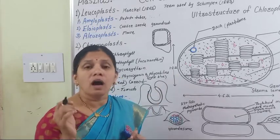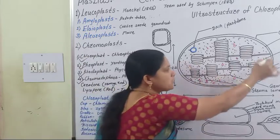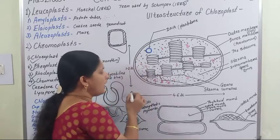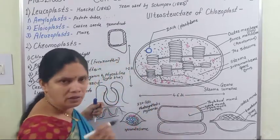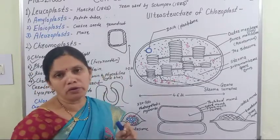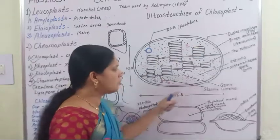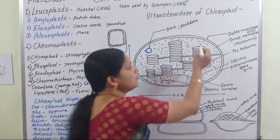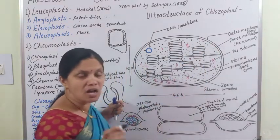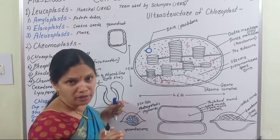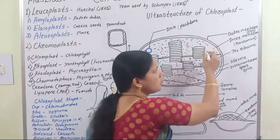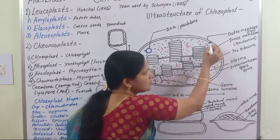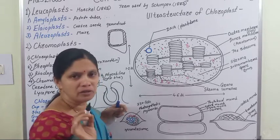If we observe the ultrastructure of the chloroplast — the chloroplast is oval or biconvex in shape. The size of the chloroplast is 4 to 6 microns in length and 1 to 2 microns in breadth. The chloroplast is a membrane-bound cell organelle with an outer membrane and inner membrane; both membranes are smooth. The outer and inner membranes are 5 nanometers in thickness.